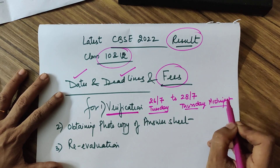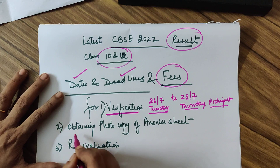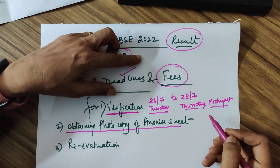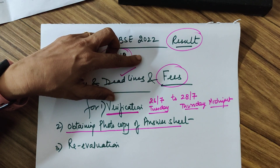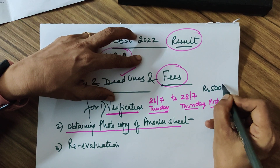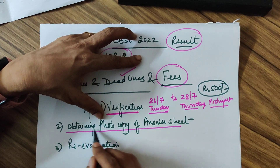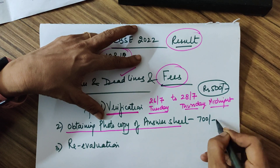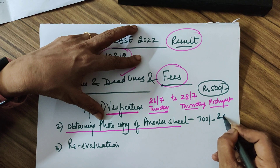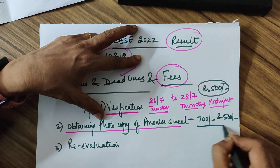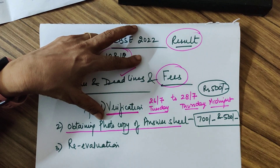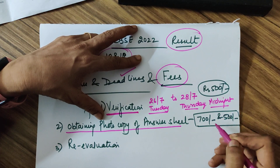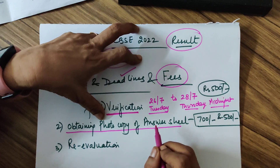In case you want the photocopy — once the verification result comes to your account and you are not satisfied — you can then request a photocopy of your answer sheet. The cost for verification is ₹500 as the processing fee. For obtaining a photocopy, there are two circulars: in one it says ₹700 and in the other it says ₹500. I'm not fully clear, but when you go to pay, it will show you the correct amount.